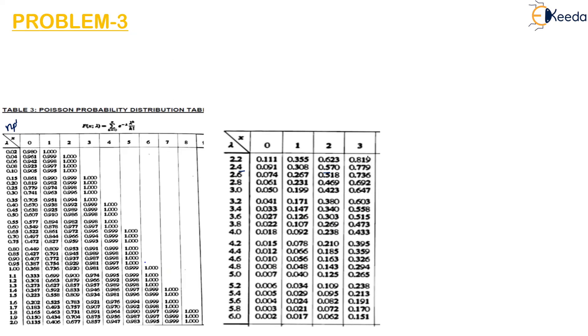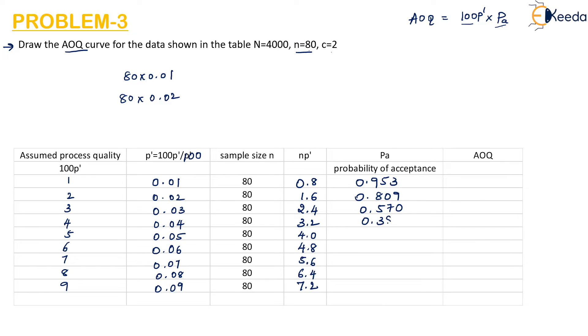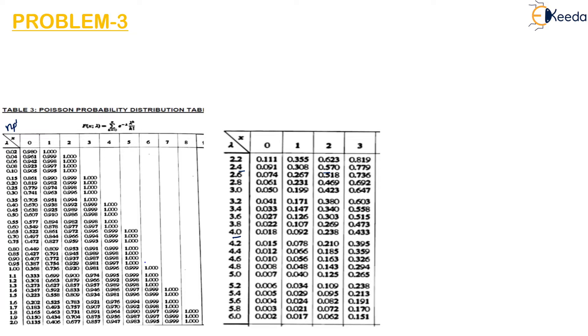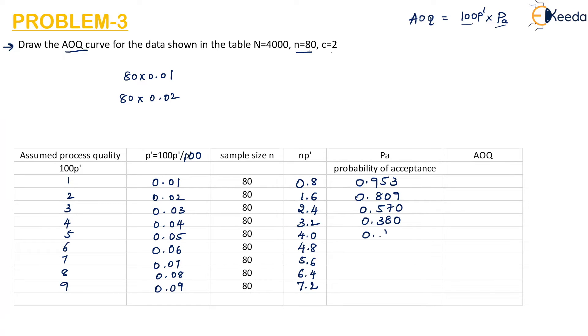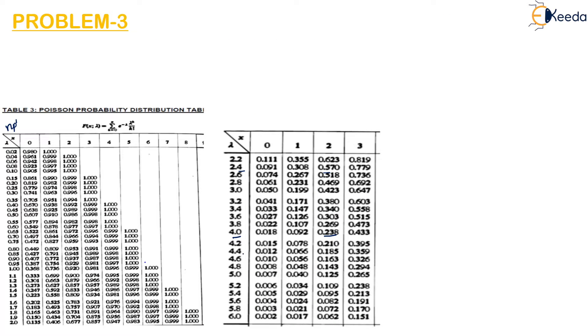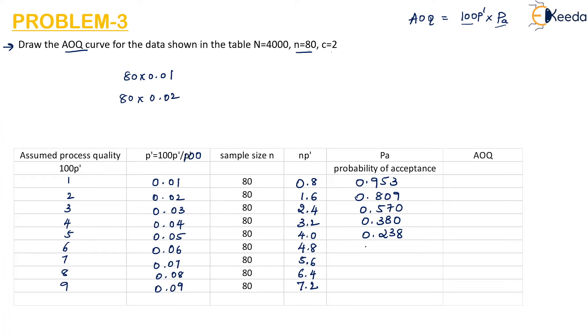Then 3.2 and C value as 2, 0.380. For nP' value 4 and C value 2, 0.238. 4.8 and 2, 0.143. For 5.6 it is 0.083. For 6.4 it is 0.064 and for 7.2 it is 0.025 from the table.